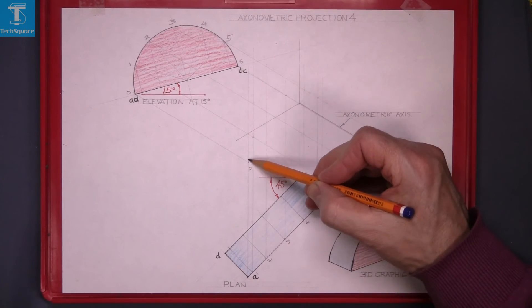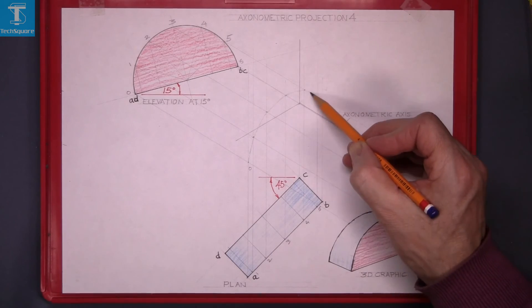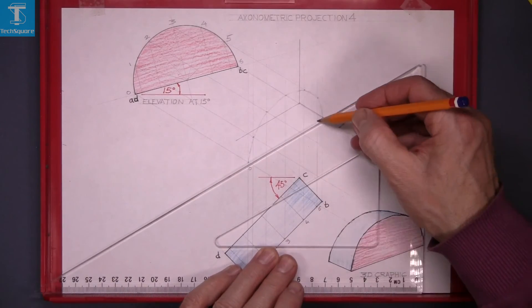Freehand curve through those points, and that's the front of the solid.